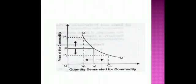This curve shows the quantity demanded for a commodity against the price of the commodity.